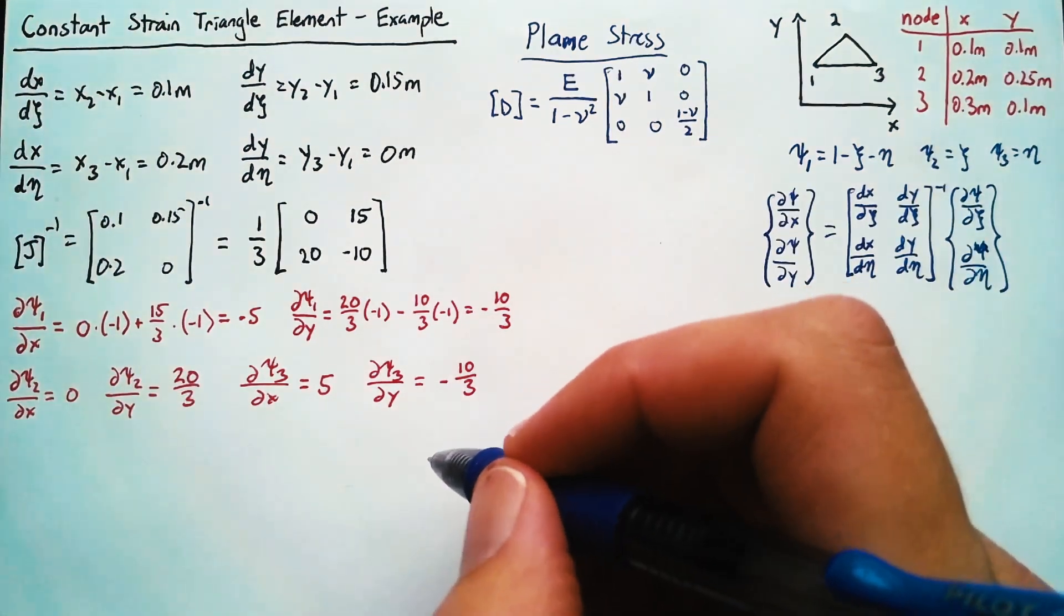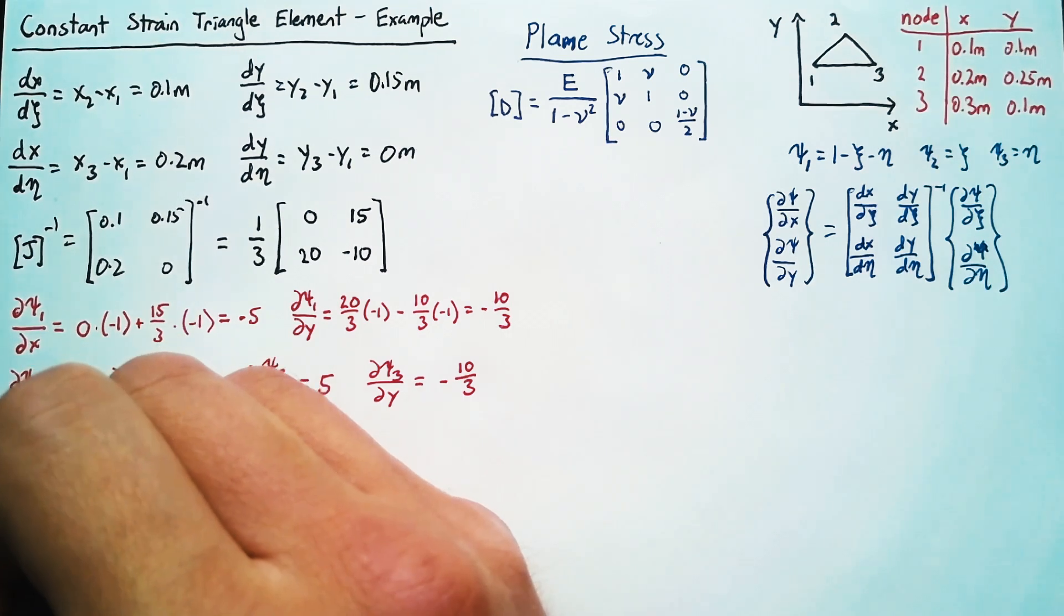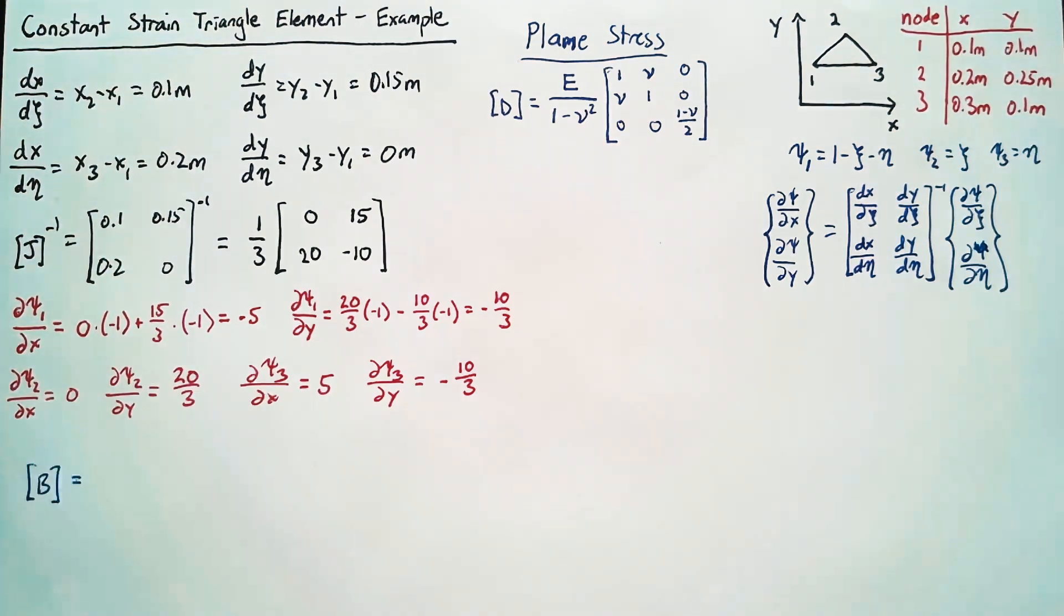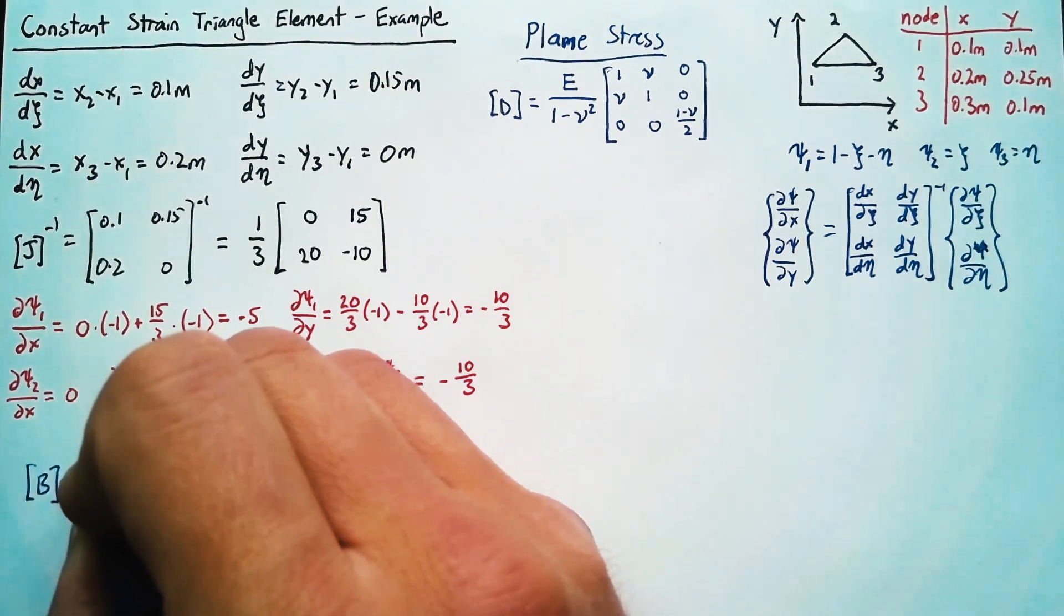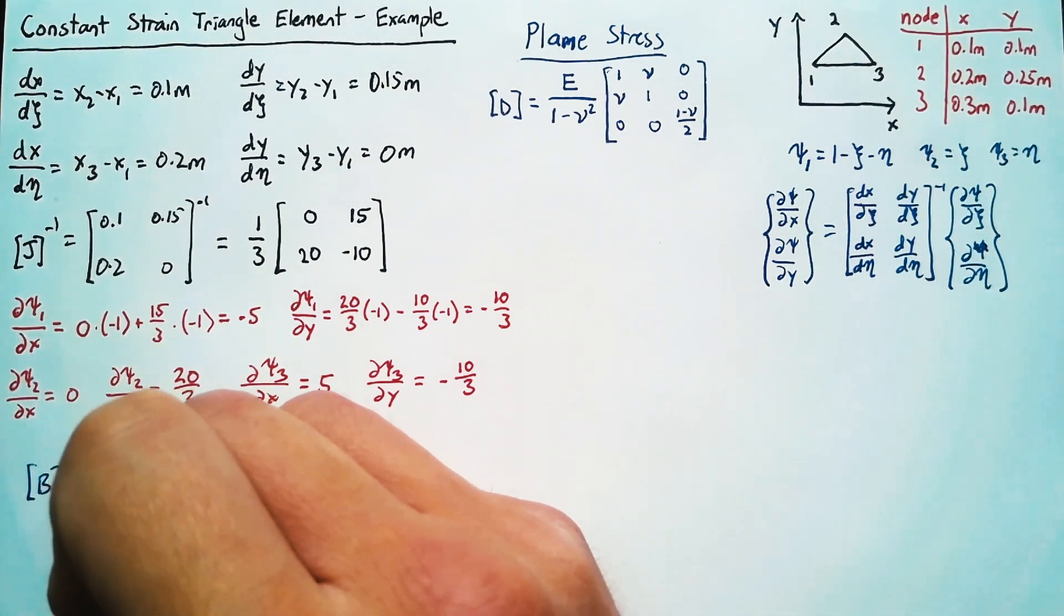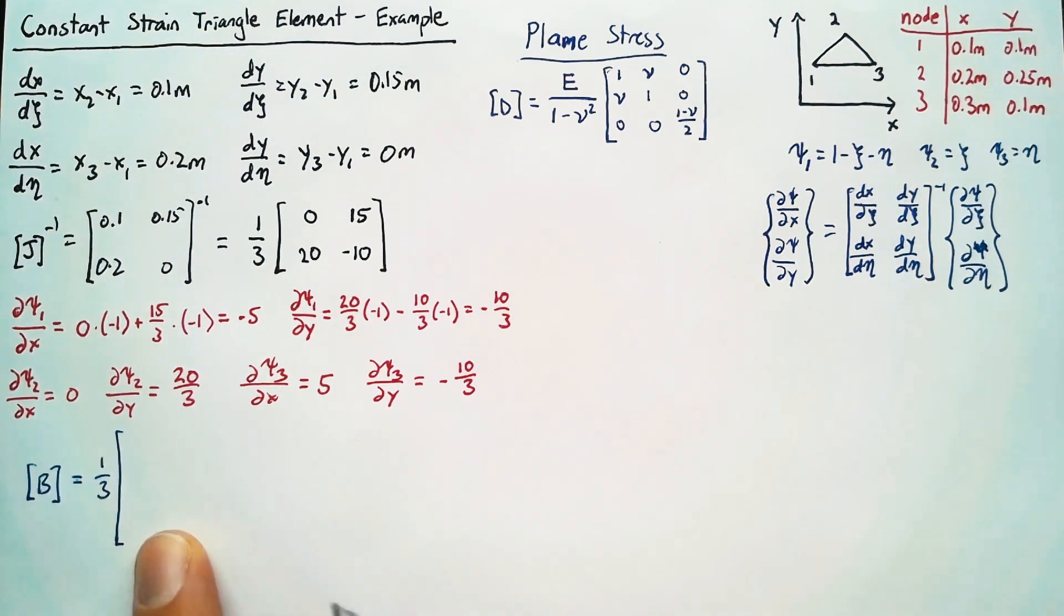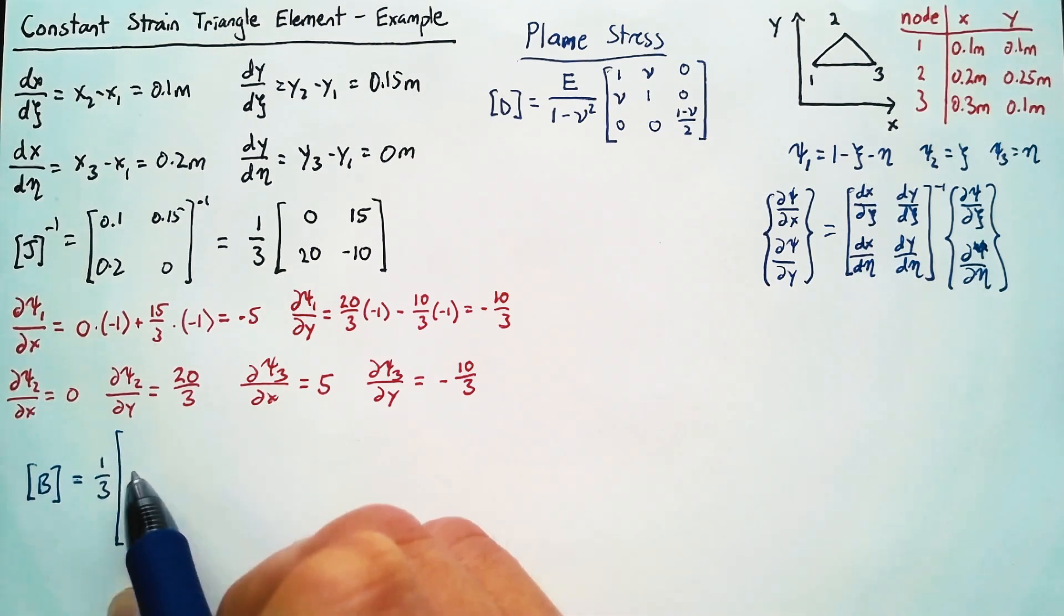So with all this in hand, we can go ahead and write out our B matrix. Now I'm going to bring this one third out front just so you don't have to write it a bunch of times. But for each little 3 by 2 segment of the B matrix, we're going to follow the pattern d psi dx, 0, 0 d psi dy, d psi dy, d psi dx.